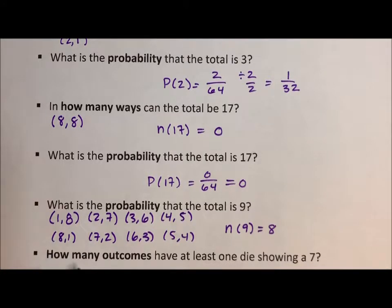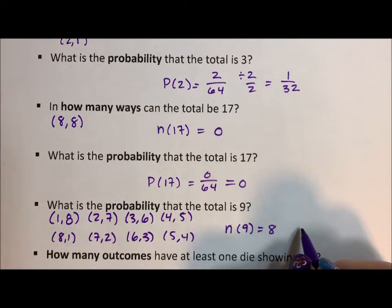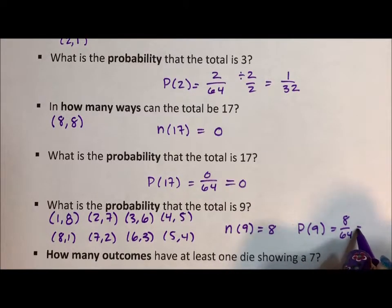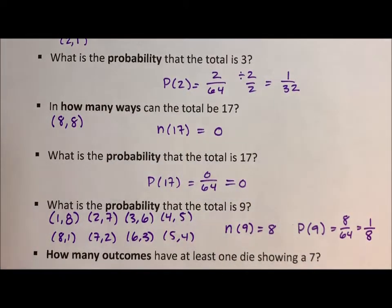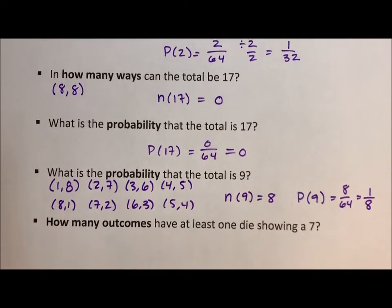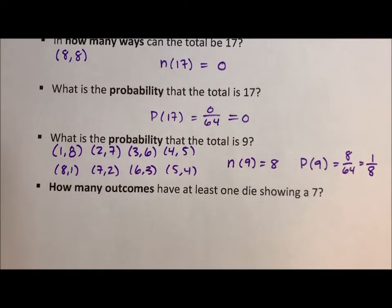First, I need to finish the previous problem. The probability of 9 is 8 over 64, or 1 over 8. That's the most common sum. Now, how many outcomes have at least one die showing a 7?